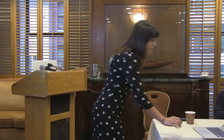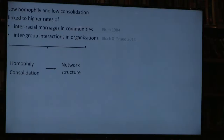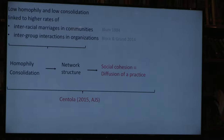In a society where ties are diverse for everyone, everything is cohesive and people get along well. There were some empirical tests of this—mostly by Blau's students—finding that low homophily and low consolidation are linked to higher rates of interracial marriages in communities and high intergroup interactions in organizations. These findings concern the first part of the argument: that homophily and consolidation affect network structure. In a relatively new paper, Damon Santola tested the second part—whether network structure also affects diffusion or social cohesion, operationalized as diffusion of a common practice.